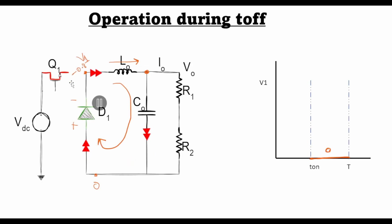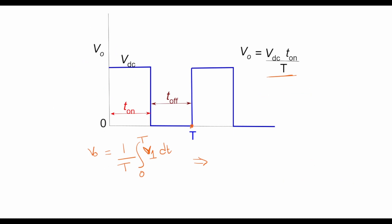So this time period can now be divided into two time periods: from 0 to T_on and from T_on till T. This can be written as 1 over T integral 0 to T_on V1 dt plus T_on to T V1 dt. Now the signal V1 only exists till T_on. After that its value is 0.